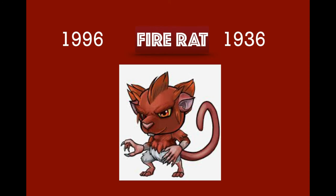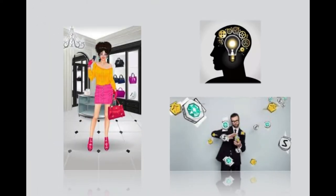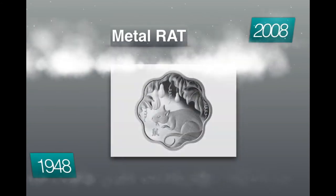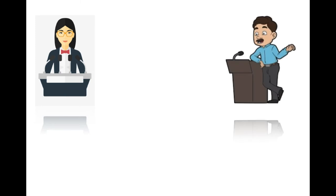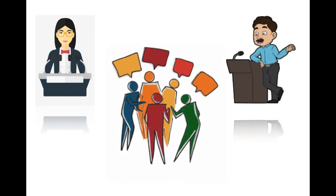1996 and 1936 is the fire rat. These rats have high IQs and EQs. They are average during youth, develop well in the middle ages, and have great fortune later in life. 2008 and 1948 is metal rat. These rats are good speakers, they're the mood makers of groups but can be slightly possessive. They face difficulties in their youth but are generally able to withstand them.